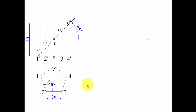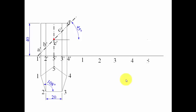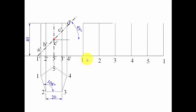Now let's develop the surface. We extend a line and place point 1. From 1 to 2 is 20 mm, 2 to 3 is 20 mm, and so on — naming points 1, 2, 3, 4, 5, and back to 1. When you unfold a pentagonal prism you get 5 rectangles, each with a base of 20 mm and a height of 40 mm.